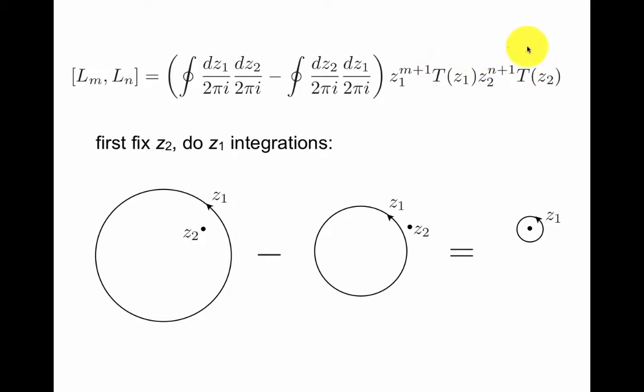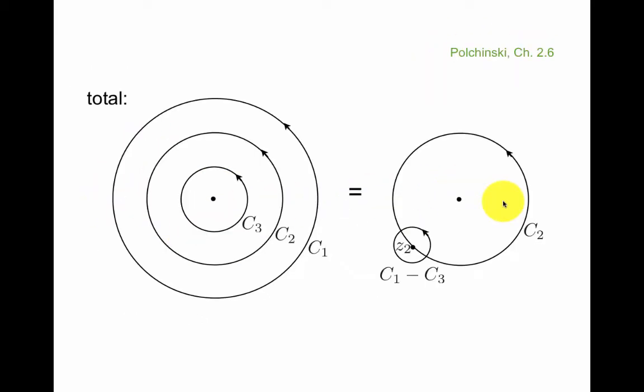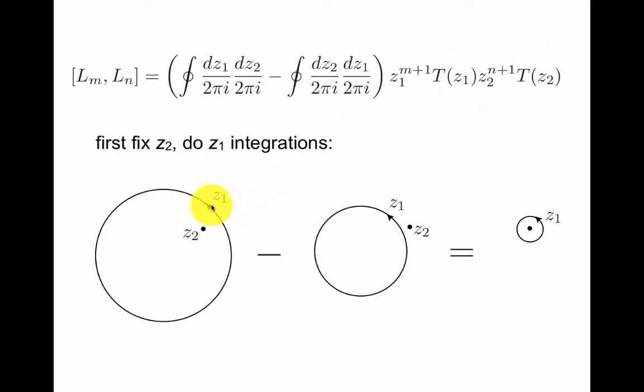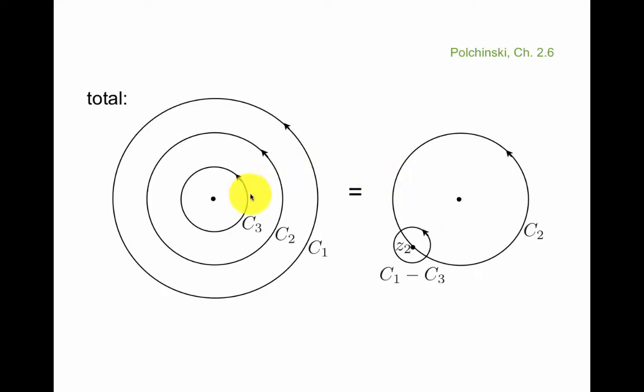We can find algebra modes from this by the same kind of trick. So instead of having dx dx, now we have tt. So again, we first fix z2, then we do the z1 integrations. It's sometimes useful as Polchinski does to draw three contours. Notice that here the z1 has to be outside the z2, and here's inside the z2, but z2 is fixed. So it's useful to picture three contours, where c2 is the z2 contour. So first you do the first one, and then get the c1 minus c3. And then you do the z2 integration.